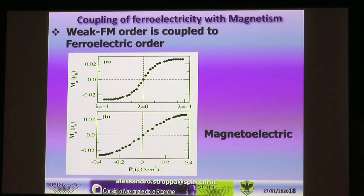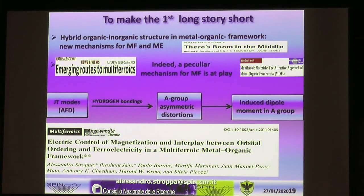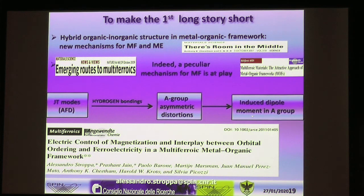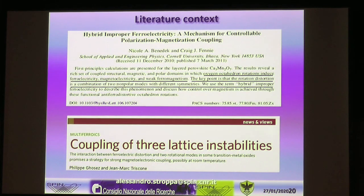We summarized everything in a paper published a few years ago. We showed that the Jahn-Teller modes in terms of antiferrodistortive modes give rise to an asymmetric distortion in the organic A-site cation through hydrogen bonding, which induces an electric dipole moment localized on the organic cation. This in turn corresponds to the presence of ferroelectric polarization in the unit cell of the compound.